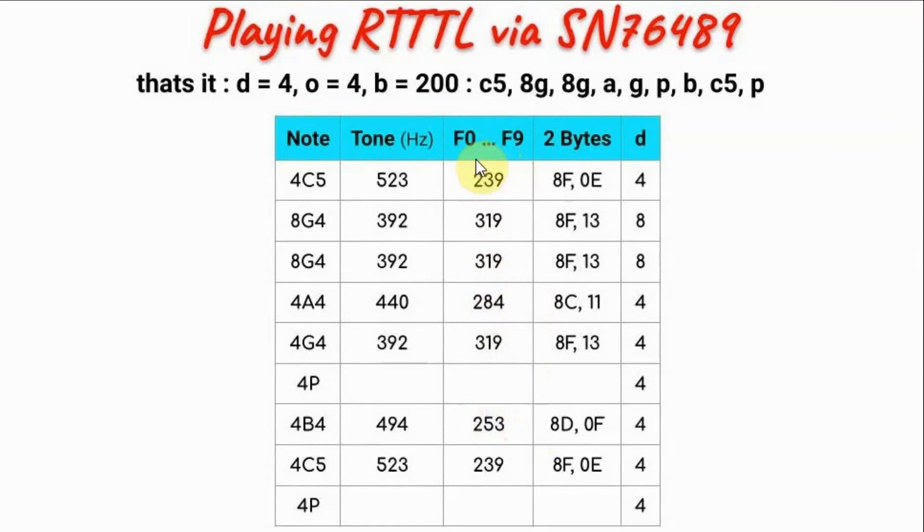This column represents the 10-bit frequency value needed to represent the tone. We can calculate this value by taking the clock frequency 4MHz, dividing it by 32, and then dividing it by the tone frequency to give us this 10-bit value.